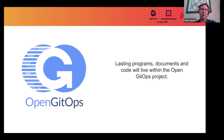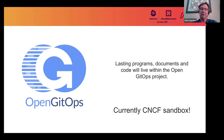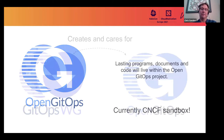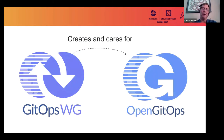Out of the GitOps Working Group, there will come permanent artifacts — programs, documents, and code — that will live for you to access. In order to find a place for those to live, we've created the Open GitOps project within CNCF. It's currently a CNCF sandbox project, and this will be the place where the artifacts are stored. The GitOps Working Group will create and care for this Open GitOps project.